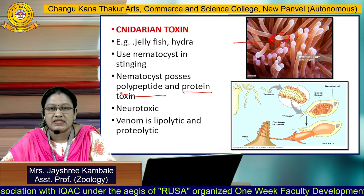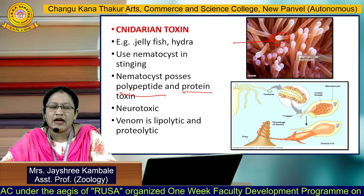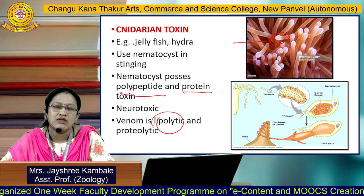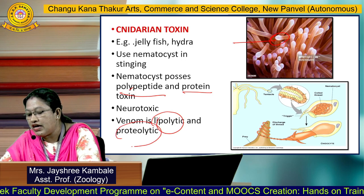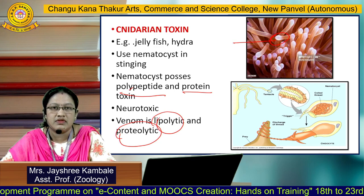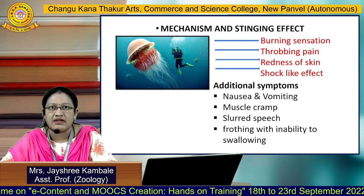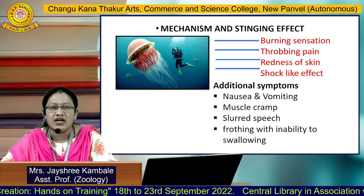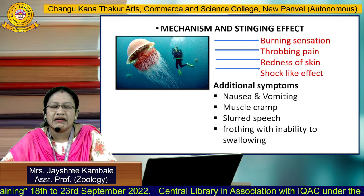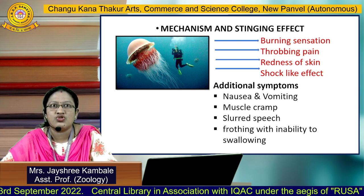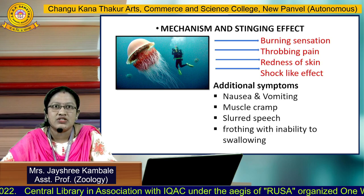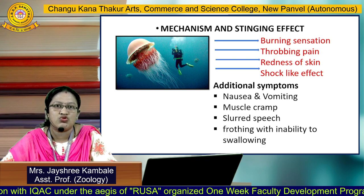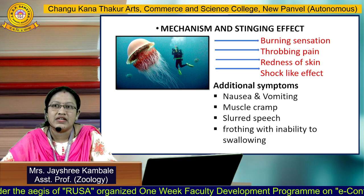The venom mainly contains lipolytic and proteolytic substances. Lipolytic means it mainly breaks down the bond between lipids, and proteolytic means it mainly breaks down the bond between proteins. Whenever an organism is attacked by these Cnidarians, such as jellyfish, it shows localized effects such as burning sensation, throbbing pain, redness of skin, and a shock-like effect. Additional symptoms include nausea and vomiting, muscle cramp, slurred speech, and frothing with inability to swallow. In severe conditions, paralysis and further death can occur.